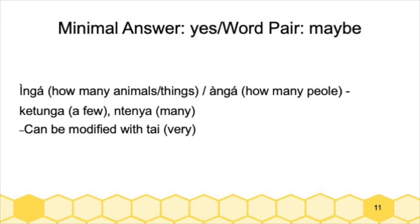For cases where it's not exactly what I was looking for — a minimal answer but not exactly a word with that meaning — for 'inga,' meaning 'how many' for animals and things, or 'anga,' how many people, I got 'ketunga' meaning 'a few,' or 'tenya' meaning 'many,' which could each be modified with 'type' meaning 'very.'